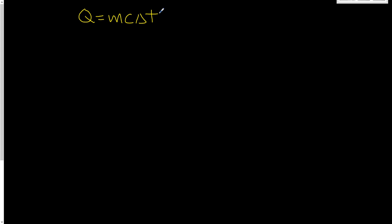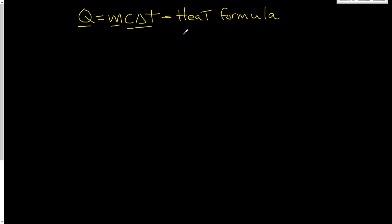Today we're going to look at this formula here that we're going to be spending some time on in some videos. It's Q equals MC Delta T. This is commonly referred to as our heat formula, and we're going to look briefly at each of the four variables that this heat formula is comprised of.